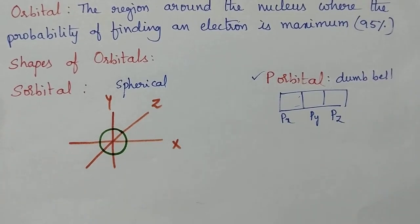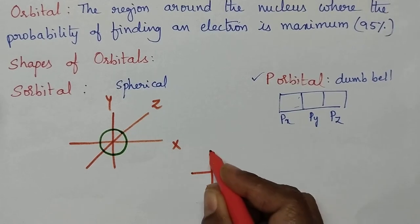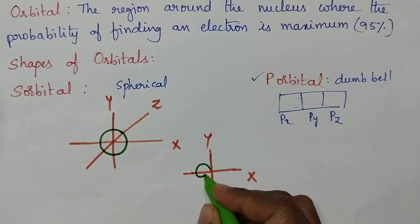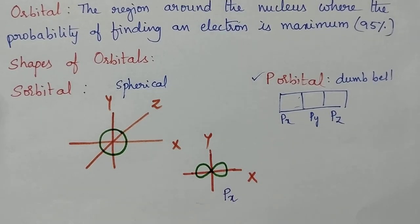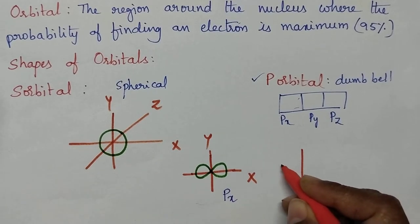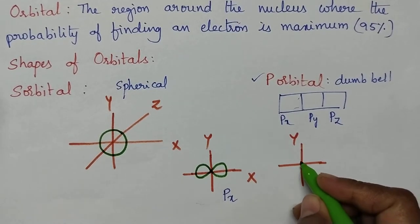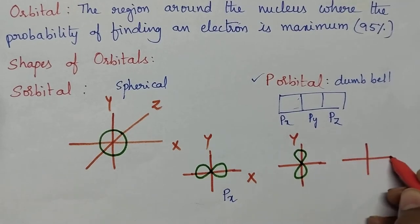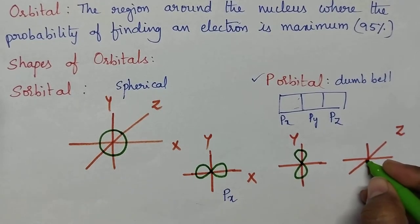Let us consider the shape of the Px, Py and Pz orbitals. In the case of the Px orbital, the probability of finding an electron is maximum along the x-axis, so it is having dumbbell shape. For Py, the probability of finding an electron is maximum along the y-axis. And for Pz, the probability of finding an electron is maximum along the z-axis.